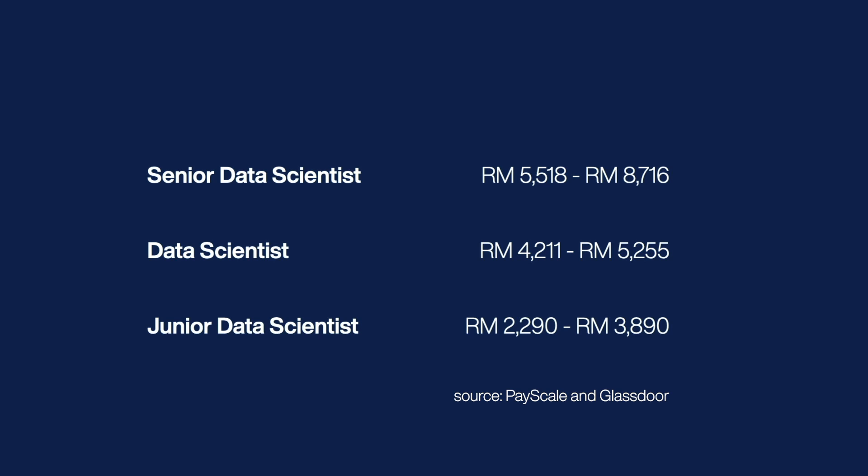The most senior data scientist is usually also the team lead of a data science team. I also didn't see too many positions for data science director. Instead, senior data scientists are promoted to chief data scientist, or sometimes chief data officer or chief information officer like CIO, and therefore their responsibilities and salaries are pretty much on par with other C-level positions like CEO and COO.